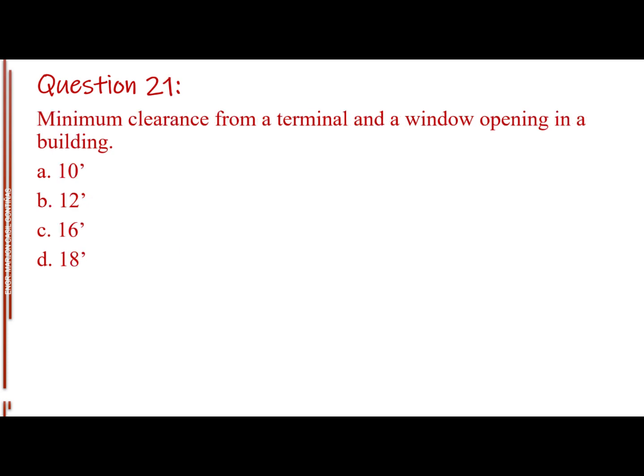Question number 21. Minimum clearance from a terminal and a window opening in a building. Letter A, 10 feet. Letter B, 12 feet. Letter C, 16 feet. Letter D, 18 feet. The answer is Letter A, 10 feet.